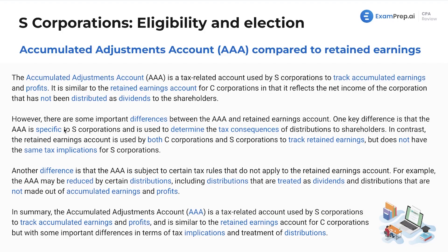One key difference is that the AAA is specific to S corps and is used to determine the tax consequences of distributions to shareholders. In contrast, the retained earnings account is used by both C corps and S corps to track retained earnings, but does not have the same tax implications for S corps. Another difference is that the AAA is subject to certain tax rules that do not apply to the retained earnings account — for example, the AAA may be reduced by certain distributions, including distributions treated as dividends and distributions not made out of accumulated earnings and profits.